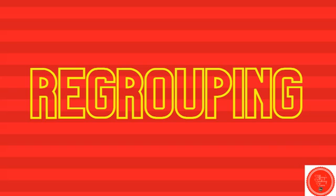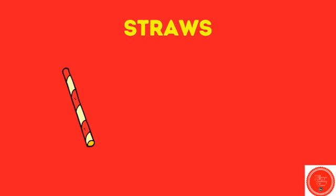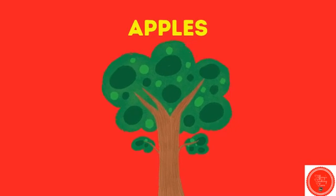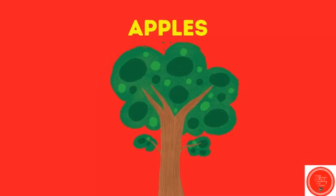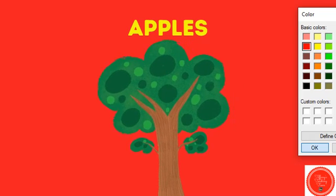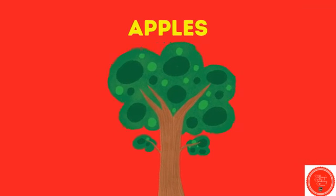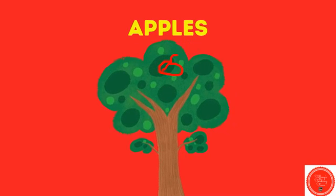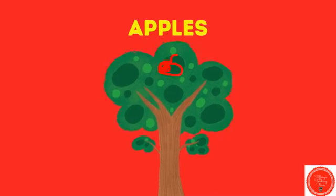Let's practice some regrouping. When we're using our regrouping straws, this one shows the number one. Now we have our apple tree. We're going to represent number one, so I'm going to draw one apple.